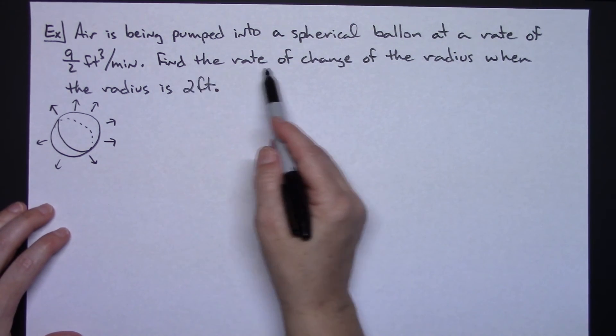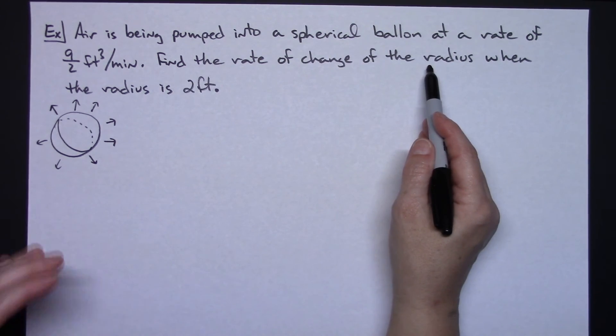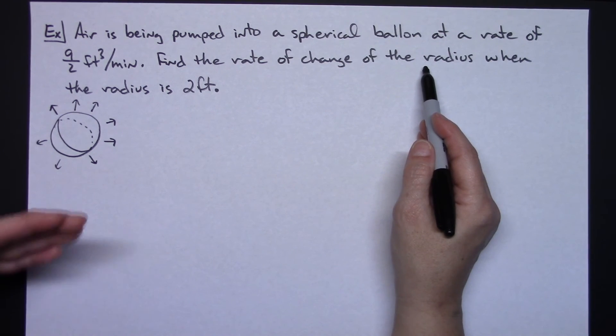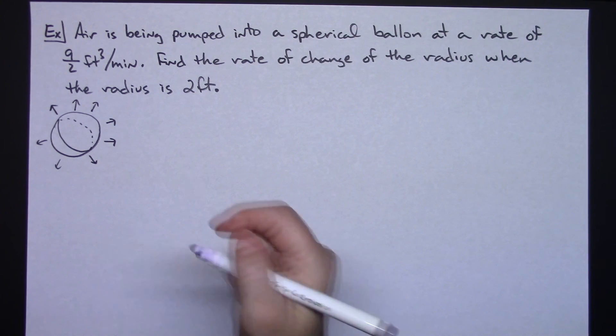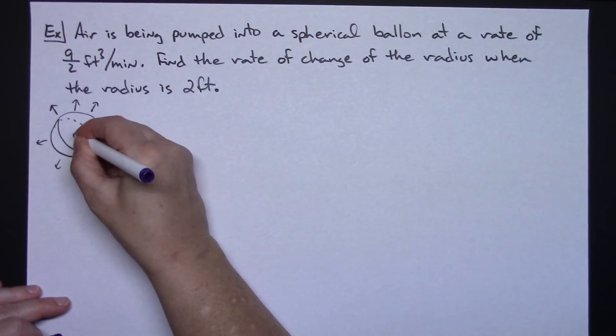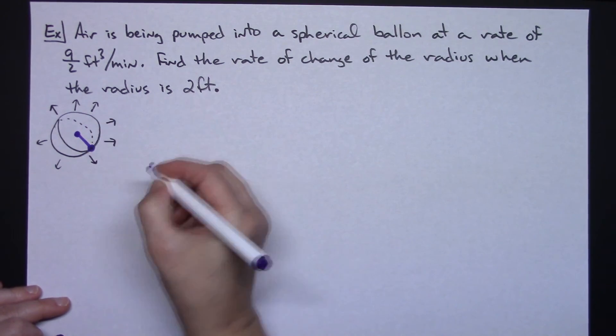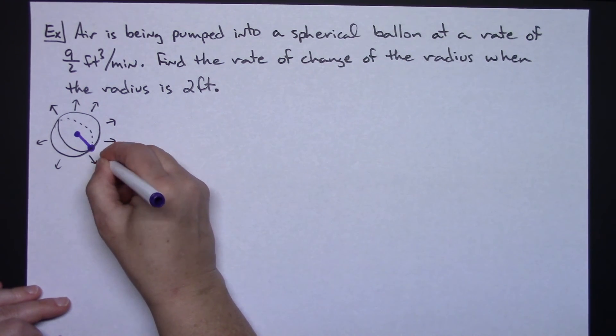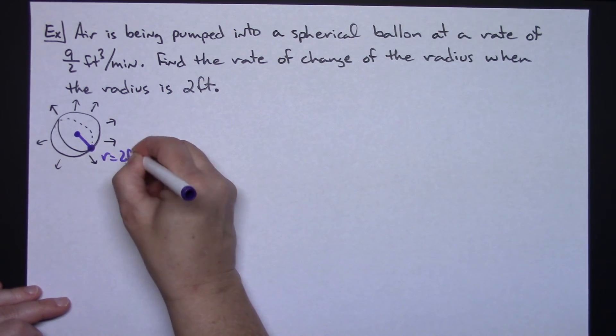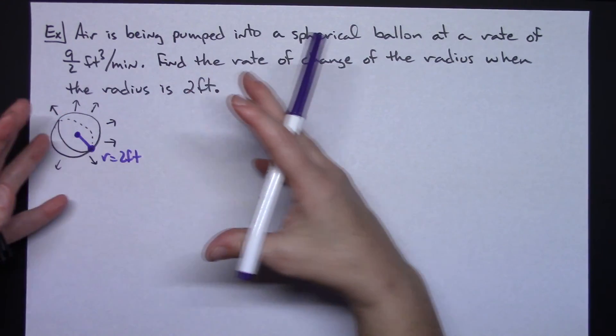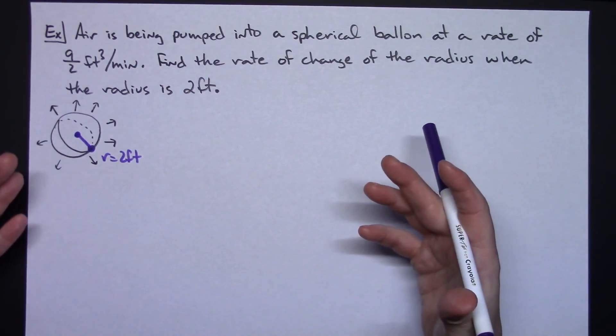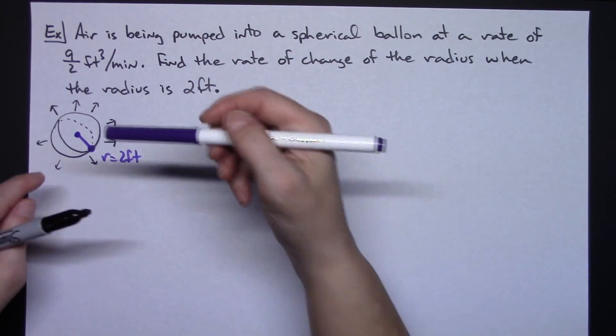And then it says find the rate of change of the radius. So I'm trying to find the rate of change of the radius when the radius is exactly two feet. When the radius gets to two feet, what is that rate of change? Because as that balloon expands, and if you've ever blown up a balloon or anything, then you can maybe visualize this.